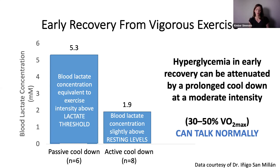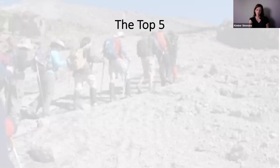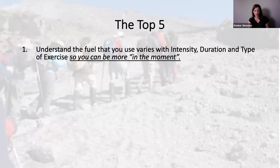A cool down where you can talk normally — whether around a track or on a machine — for at least 15 minutes, though even 10 minutes provides benefit, helps reduce lactate levels. In summary, the top five tips are: understand the fuel you use varies with intensity, duration, and type of exercise so you can recognize if you're at risk for highs or lows, then figure out what tools to use.